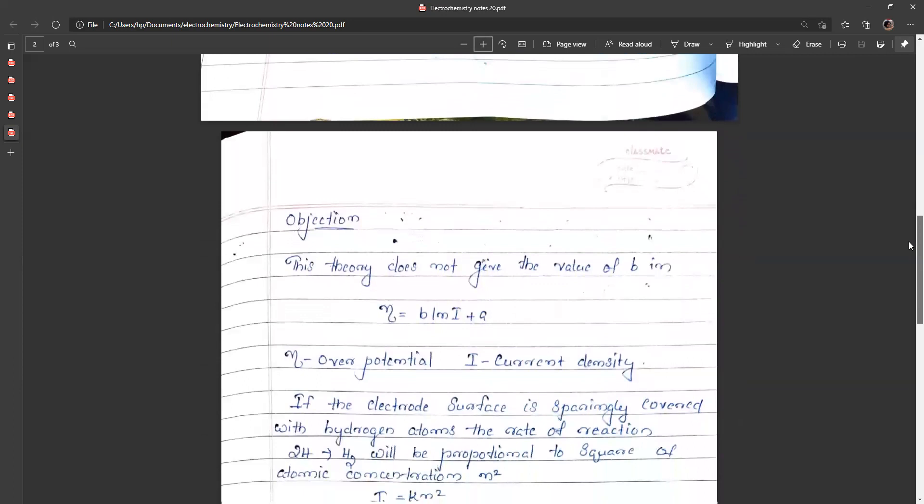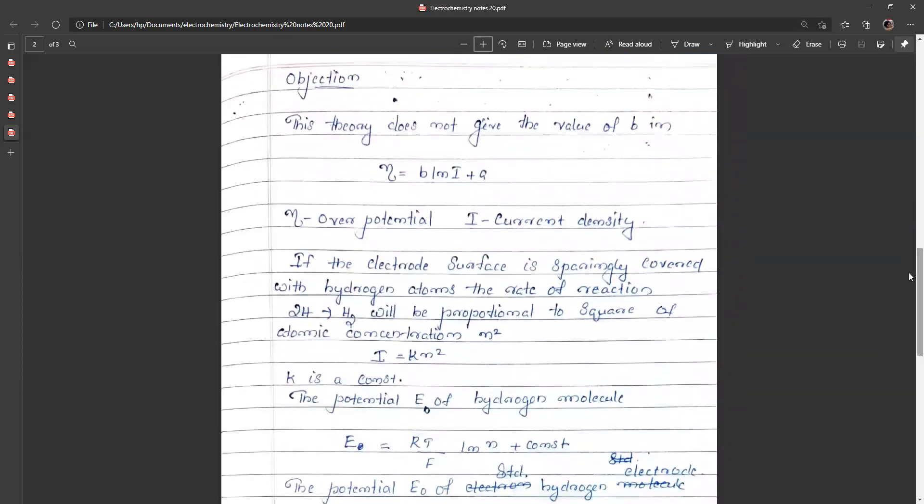And then objection. This theory does not give the value of b in eta equals b plus log i plus a, where eta is overpotential and i is the current density. If the electrode surface is sparingly covered with hydrogen atoms, the rate of reaction to H2 will be proportional to the atomic concentration n squared. That is, combination of hydrogen atoms to H2 will be proportional to the concentration n squared.